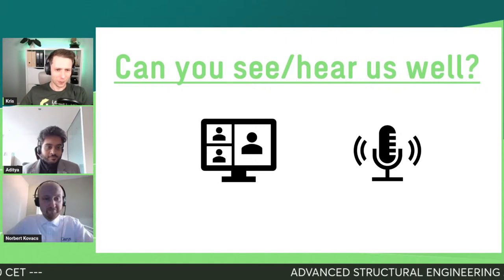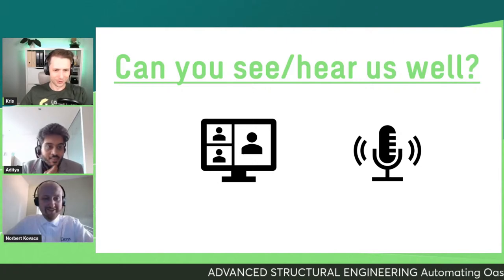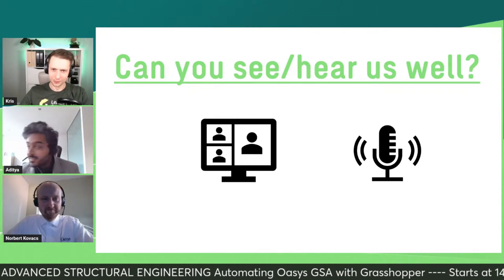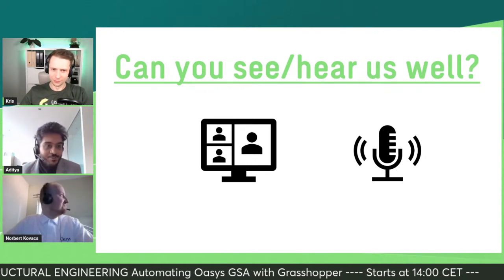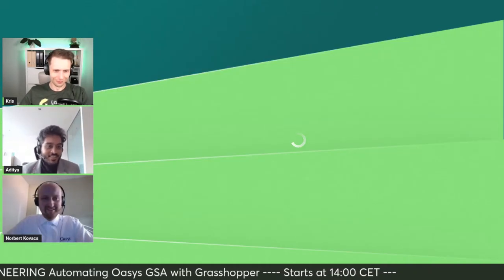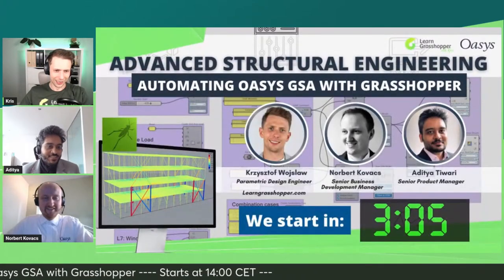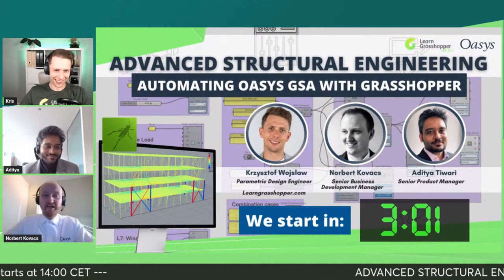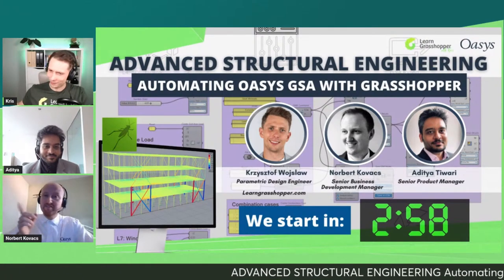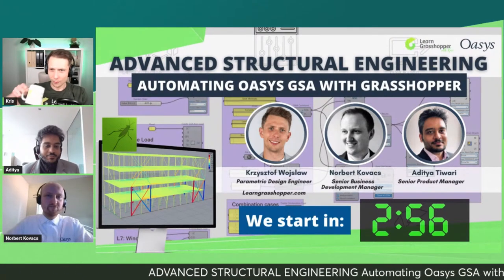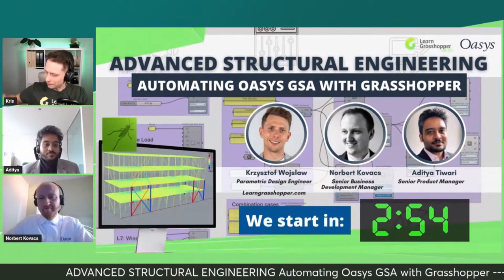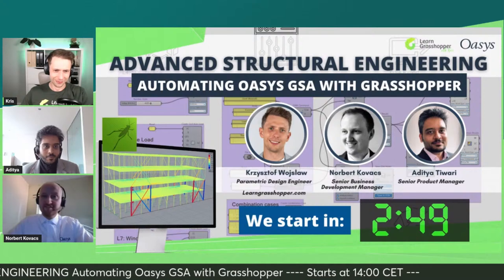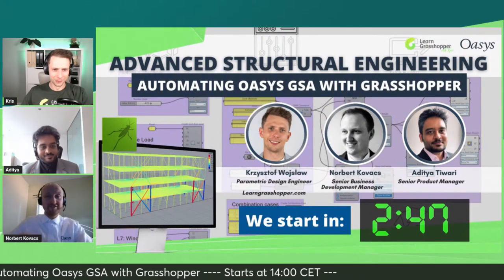Adi is in Leeds in the UK, enjoying a sunny afternoon, which is quite rare. Norbert is near London, in a place called Southend-on-Sea — can't see the sea but the sun is coming out. Great start to the day.